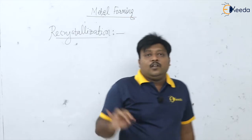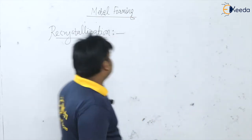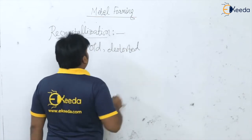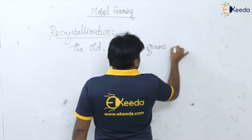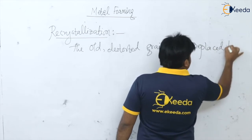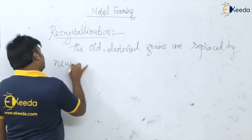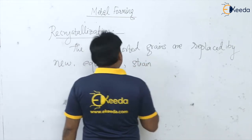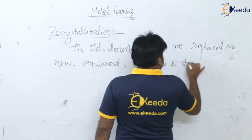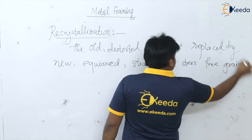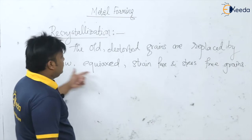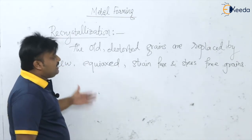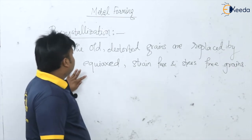Recrystallization is the process in which the old, distorted grains are replaced by new, equiaxed, strain-free and stress-free grains through nucleation and growth. This is known as the recrystallization process.